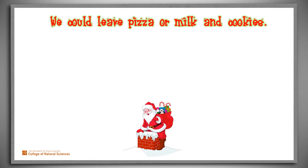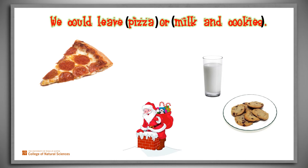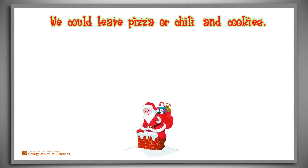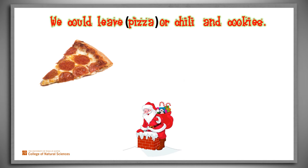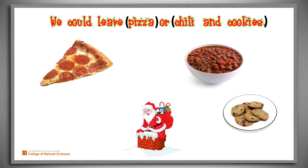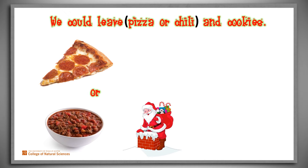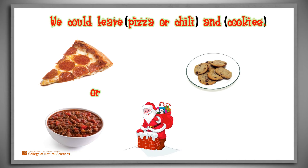Consider: what do you think Santa would like? We could leave pizza or milk and cookies. Surely what Alan is suggesting is pizza, or the more classic milk and cookies. But now suppose Alan says, 'We could leave pizza or chili and cookies.' Now he's probably not suggesting pizza or chili and cookies — a much more reasonable meal for Santa would be pizza or chili, plus cookies. English sentences are often structurally ambiguous in this and various other ways.